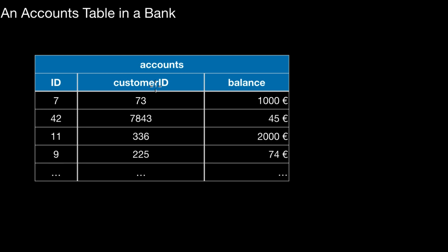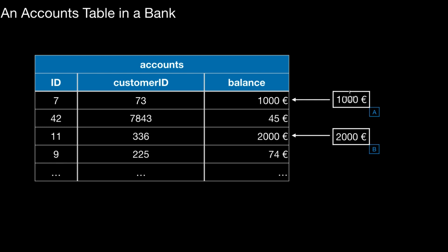Transactions and ACID are two of the most important concepts in database technology, and this video will explain these two concepts. I will use as a running example an accounts table in a bank. That table might look something like this. You have an ID, customer ID, and a balance. Basically, account with ID 7 belongs to customer 73 and has a current balance of 1000 euros. For simplicity, I will refer to individual cells as A and B rather than using full SQL.